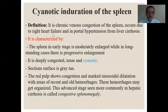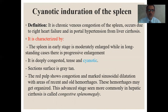The cyanotic induration of the spleen — this is chronic venous congestion of the spleen. It is caused by right heart failure and portal hypertension from liver cirrhosis. It is characterized by the spleen being moderately enlarged in early stages, while in long-standing cases there is progressive enlargement. It is deeply congested, tense, and cyanotic. The section surface is gray-tan. The red pulp shows congestion and marked sinusoidal dilatation with areas of recent and old hemorrhages. These hemorrhages may become organized. This advanced stage, seen more commonly in hepatic cirrhosis, is called congestive splenomegaly.